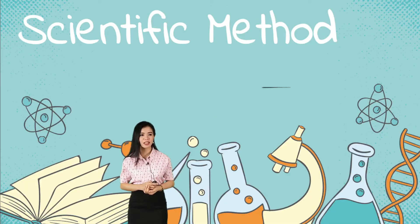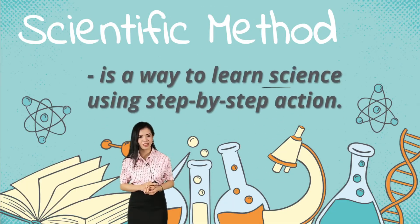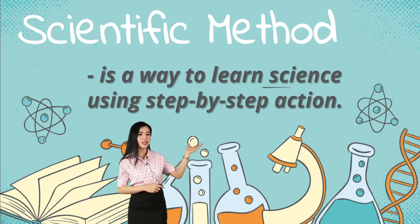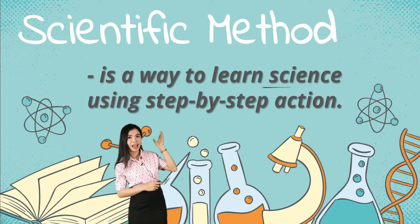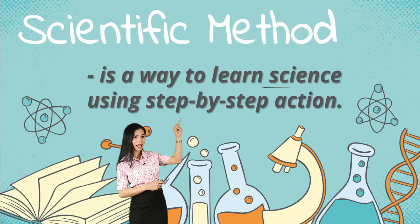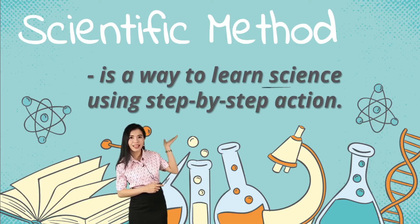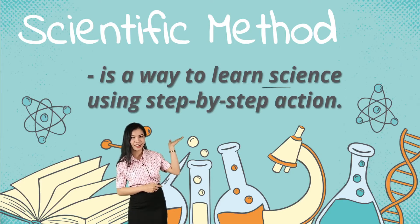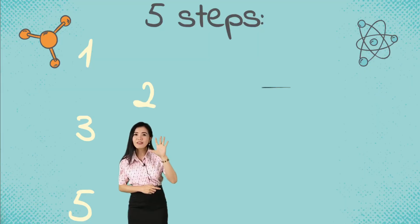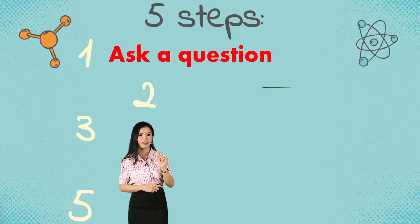This method is called the scientific method. It is a way to learn science using a step-by-step action. Now we have five simple steps in this method. First, we have: ask a question.